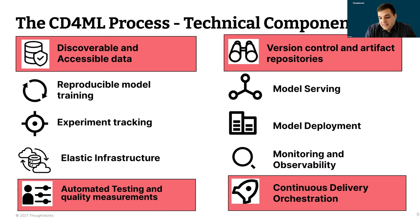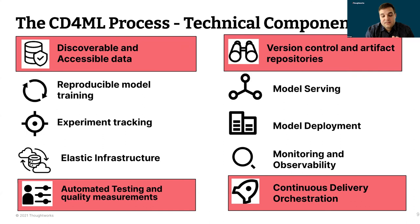Lastly, continuous delivery orchestration — being able to orchestrate all of these components together to put them into production with a one-click deploy process is the goal. Continuous delivery orchestration sits over all of these different technical components so that once you're ready to go live, you can push it out into production with no problems and no stress on your developer team or your business.